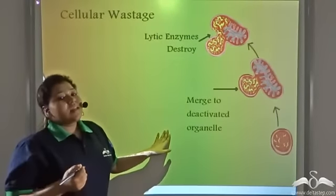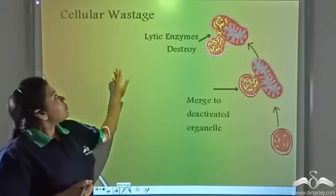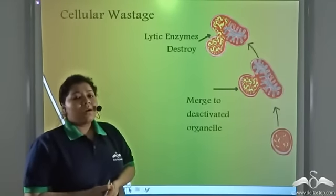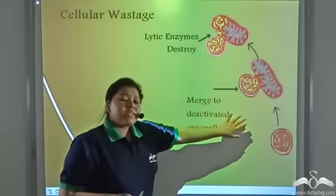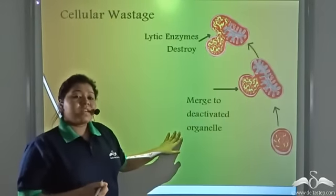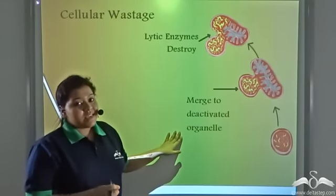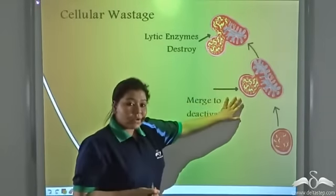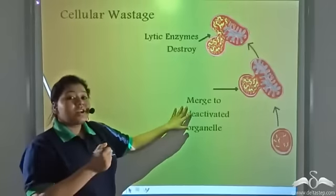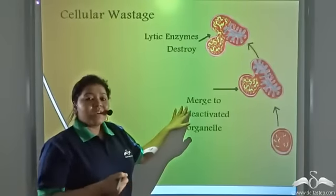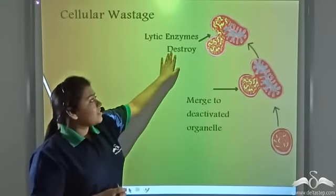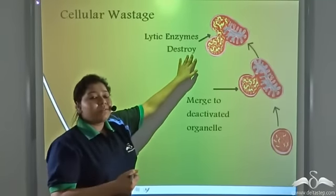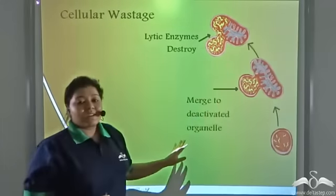So what does a lysosome do? Cellular wastages like improperly folded proteins or deactivated organelles need to be destroyed, otherwise they might cause harm in the cell. So the lysosomes merge with these deactivated organelles and transfer the lytic enzymes present in the lysosomes. And these lytic enzymes that are present inside the lysosomes breaks down the deactivated organelles.